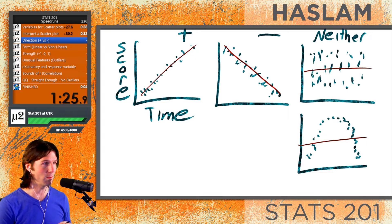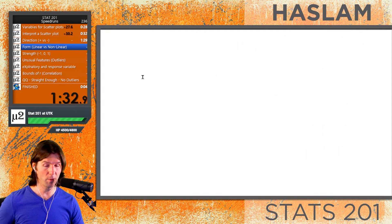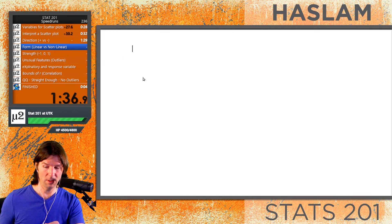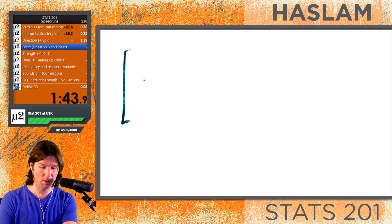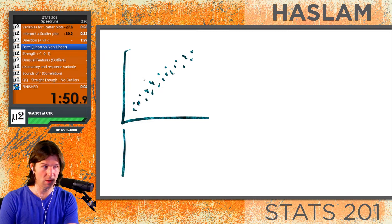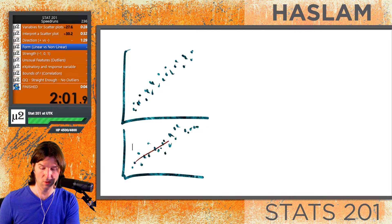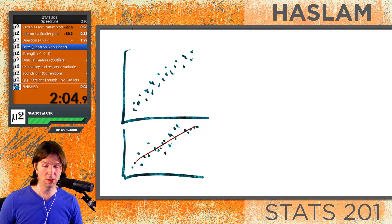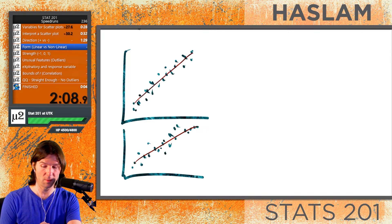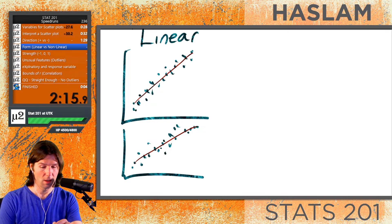The next thing to talk about is the form of a scatter plot. There are two major forms: linear and nonlinear. A linear scatter plot is one that is generally well described by a straight line. Even if there's a slight bend, as long as a straight line goes through the majority of the data, we consider it linear.